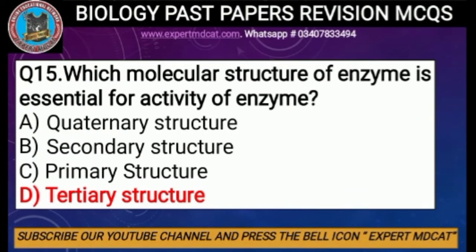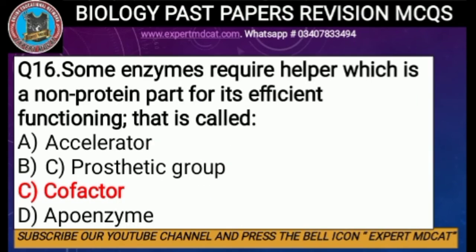Question number fifteen: which molecular structure of enzyme is essential for the activity of an enzyme? Enzymes are globular proteins. Proteins have two types — fibrous proteins have secondary structure, while globular proteins have a tertiary structure. Since enzymes are globular proteins, they must have a tertiary structure. The correct option is D, tertiary structure.